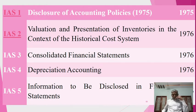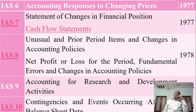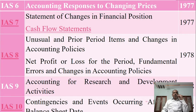IAS 6 is on accounting responses to changing prices, established in 1977. IAS 7 covers the statement of changes in financial position — mainly cash flow statements — with standards and guidelines for cash flow statements, established in 1977. IAS 8 follows next.